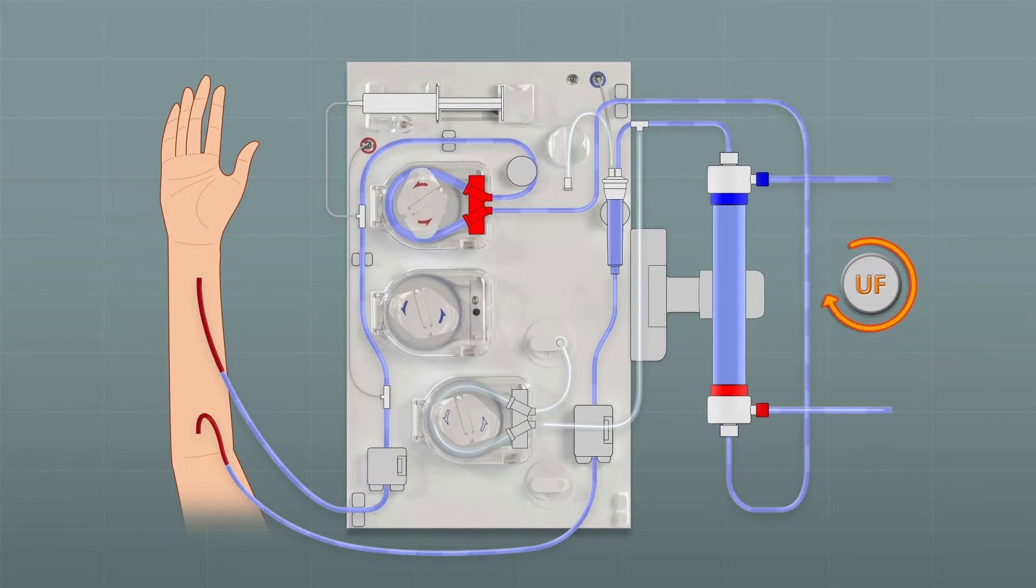Arterial and venous line are connected to the patient. Once the blood pump has been started, the UF pump will start as well and remove the volume by ultra filtration. No drain bag is needed.